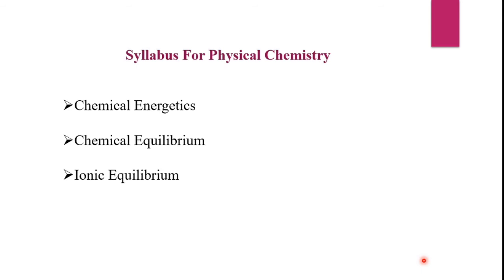We will also study the law of mass action. In the next chapter, that is ionic equilibrium, we are going to study different types of electrolytes, degree of dissociation, factors affecting degree of dissociation, ionic product and solubility product, pH scale, sparingly soluble salts, and many more things. So first of all, we will move towards our first chapter, that is chemical energetics.